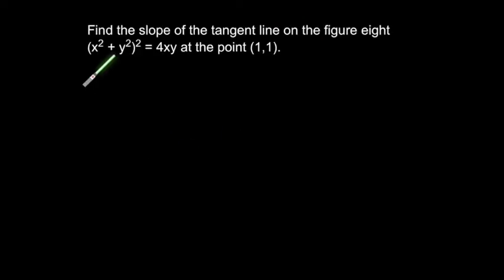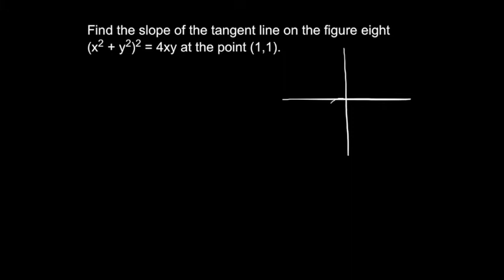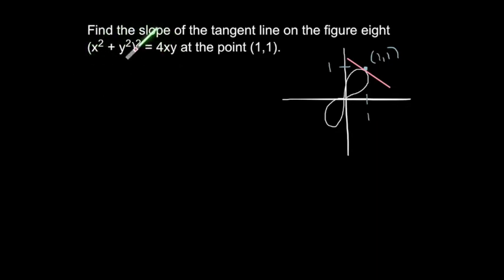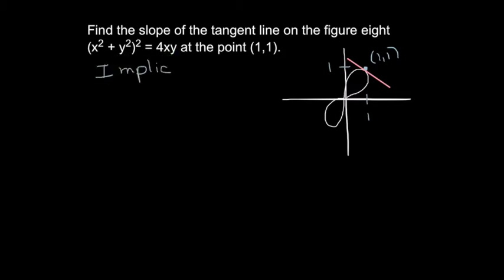Let's try another example: x squared plus y squared, all squared, equals 4xy. This is not a circle — it's a figure eight. You can see why implicit differentiation is useful here. To solve for y, you would have to square this out and solve a fourth-degree polynomial, which is not an easy task. So we use implicit differentiation because it's too hard to solve for y in terms of x.